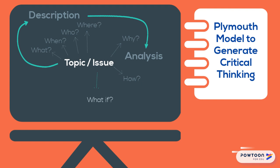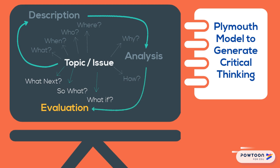The three questions — what if, so what, and what next — can help you come to your own conclusions and make judgements about what you've read. This is the evaluation stage. By asking what if, you may consider the limitations of what you've read. By asking so what, you can question the significance of what you've read. And by asking what next, you can judge what you will do with the information.